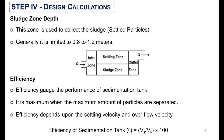In step 4, we estimate the depth of the sludge zone. The sludge zone is where settled particles are collected in the form of sludge, and its depth is generally limited to 0.8 to 1.2 meters.